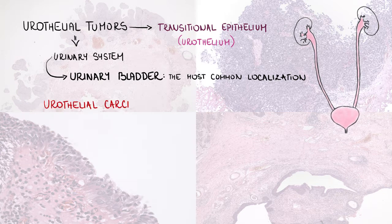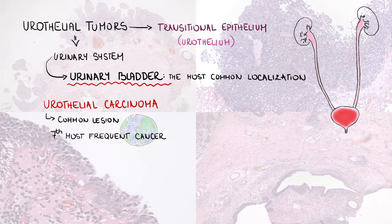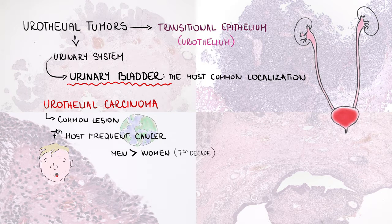Urothelial carcinoma is a common lesion. In the urinary bladder, it represents the seventh most frequent cancer worldwide. The incidence is higher in men than women, and the majority of patients are in the seventh decade of life. The most important risk factor is cigarette smoking.